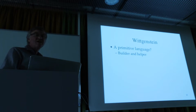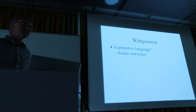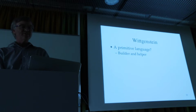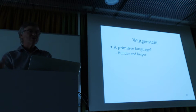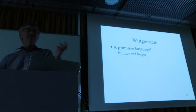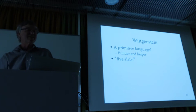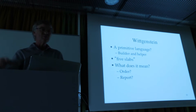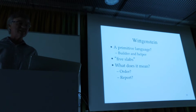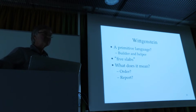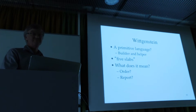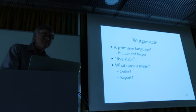Wittgenstein asks: would a primitive language work based on this view of meaning as attached to words? Imagine a builder and a helper with words like slab, block, pillar, and numbers one through five. An utterance like 'five slabs' — what does it mean? It could be an order for five slabs, a report that five slabs are left, or that five more are needed. It depends. Even that simple utterance doesn't have fixed meaning. My colleague Bill Turnbull always says you shouldn't use made-up examples — you need real ones.